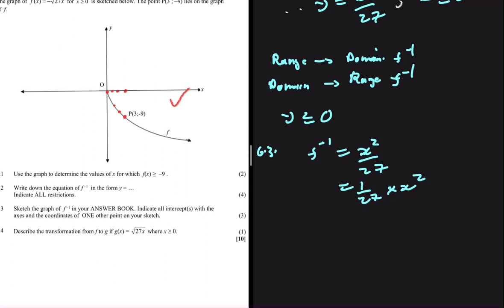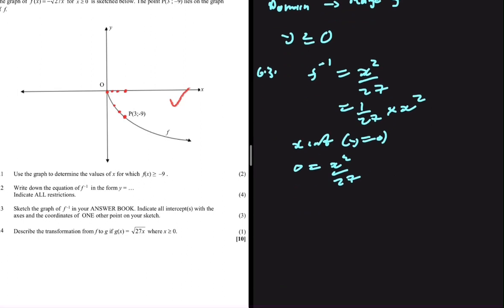We need to indicate our intercepts. So x intercepts, y is equals to 0. So if we let y be equals to 0, we're going to have x squared divided by 27. Now if you cross multiply, you're going to realize fairly quick that x is also equals to 0. And then the y intercepts, we'll let x be equals to 0. So we're going to have y being equals to 0 divided by 27. Again, the y intercepts is at 0 and 0.